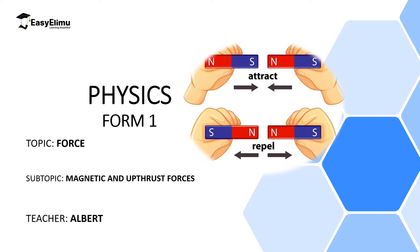Hello students, welcome to ECLIMU Learning Simplified and welcome to this lesson. In the previous lessons we discussed force — we said force is a push or a pull on an object. Then we discussed two types of forces: gravitational force, which is a force of attraction between two bodies at a distance and makes bodies move towards the ground, and centripetal force, which is a force that maintains a body in circular motion.